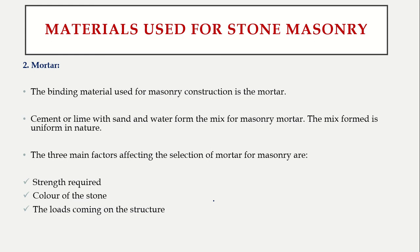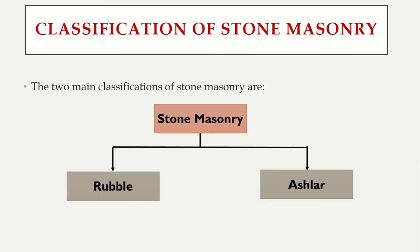We take one part of cement and three parts of sand, then add water to make the mortar. The factors affecting the selection of mortar are: the strength — how well you want the bond between the stones; and the color of the stone. For example, with white marble stones you should select lime mortar, which also looks white. Also consider the load on the structure — heavier loads require stronger cement mortar.